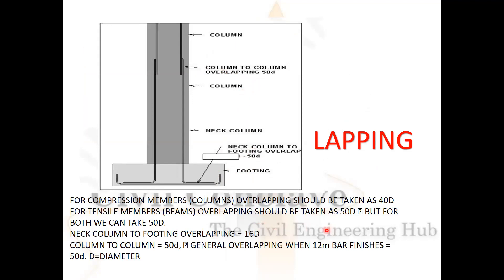For generalizing purposes, we take 50d for both. Neck column to footing overlapping = 16d. Column to column = 50d general overlapping. Column bar lap length = 50d × diameter.